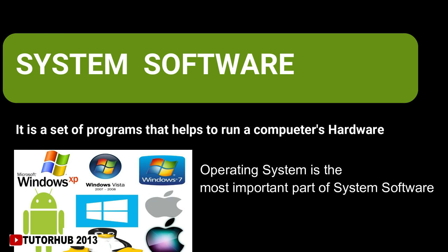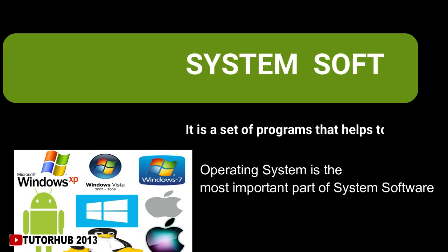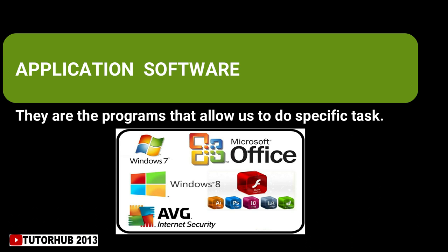Without an operating system, a computer cannot work. Examples of operating systems are Windows, Ubuntu, Mac OS, and Linux. Application software refers to programs that allow us to do specific tasks — a computer can still work without application software. Examples include MS Paint, TextPaint, MS Word, and Calculator. MS Paint and TextPaint are used to draw pictures, MS Word is used to type text in documents, and Calculator is used to perform arithmetic operations.